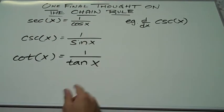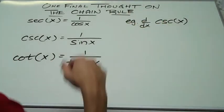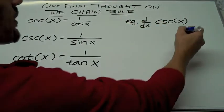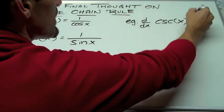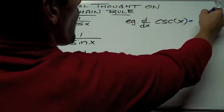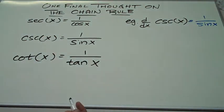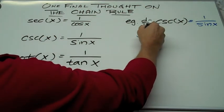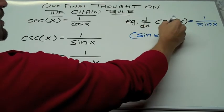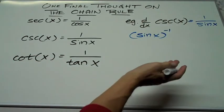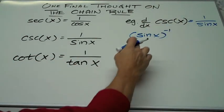For example, if we're asked to find the derivative d dx of cosecant x, we could recognize that it's really taking the derivative of 1 over sine x because those are equal. Well, we could write that as sine x to the negative 1. Because it's in the denominator, we'll bring it up top.